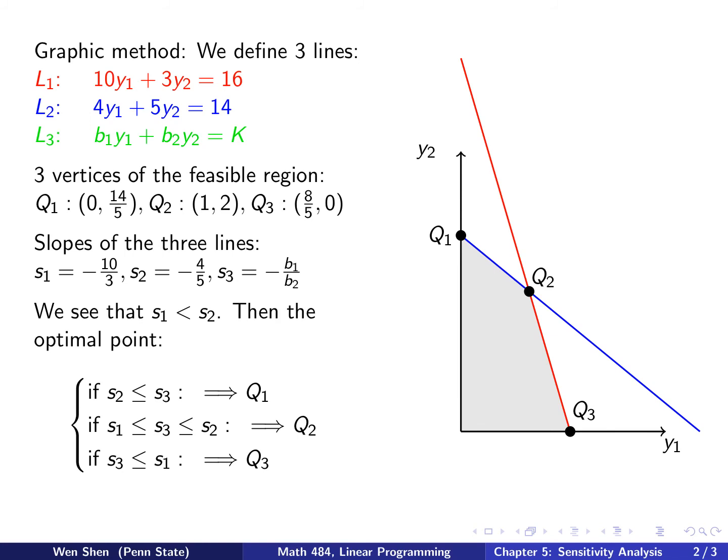And the second is when this S3 is between S1 and S2, so it's an intermediate slope. And then if you move such a line parallelly up and down, you will hit q2. So q2 will be your optimal point.